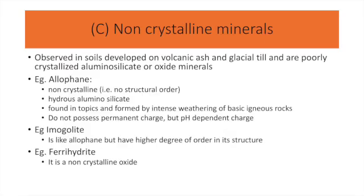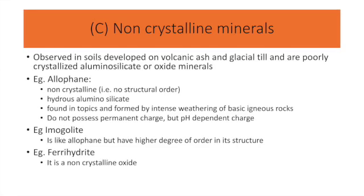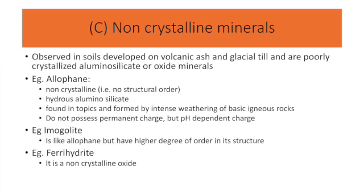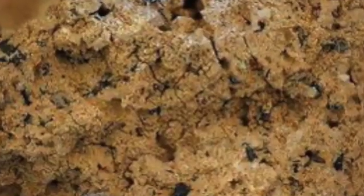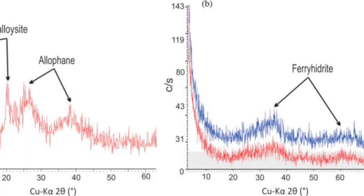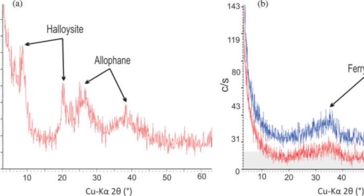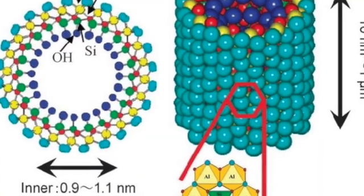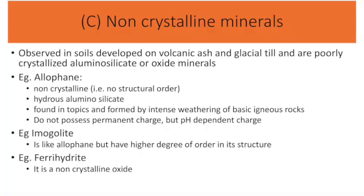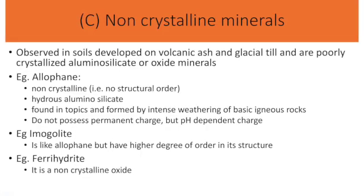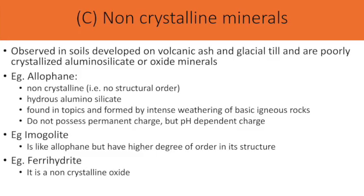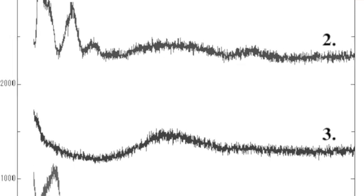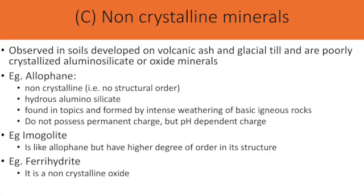The third category of soil colloid is the non-crystalline minerals. They are observed in soils developed on volcanic ash and glacial fields, and are poorly crystallized aluminosilicates or oxide minerals. Examples are allophane, imogolite and ferrihydrite. Allophane is characterized by no structural order, which is why they are non-crystalline. They are hydrous aluminosilicates found in the tropics, formed by intensive weathering of basic igneous rocks. They do not possess permanent charge but have pH-dependent charge.